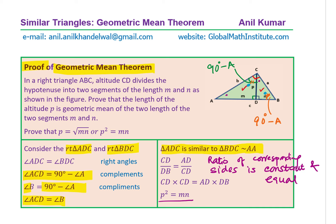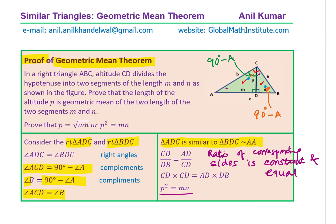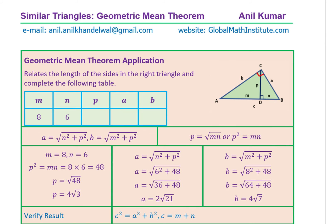Now we are ready to solve the questions. In this triangle, we have the important relation P equals the square root of MN, or P squared equals MN. From the bigger triangle, using the Pythagorean theorem: side A equals the square root of N squared plus P squared, and side B equals the square root of M squared plus P squared. With these formulas we can now fill in the table.